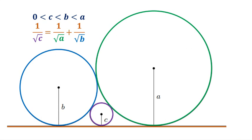We have three circles tangent to each other and to a line. The radii are a, b, and c units, with the condition that a is greater than b and b is greater than c. We will show that 1 over the square root of c is equal to 1 over the square root of a plus 1 over the square root of b.